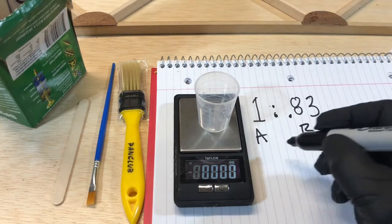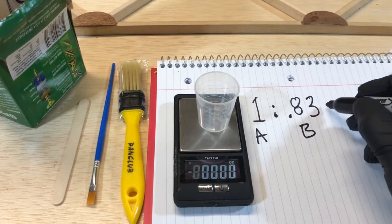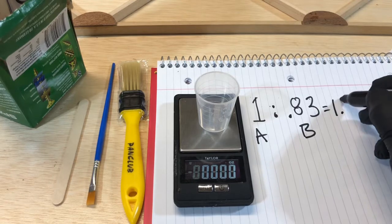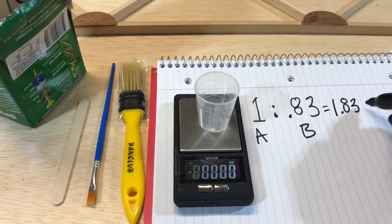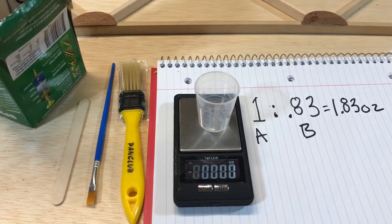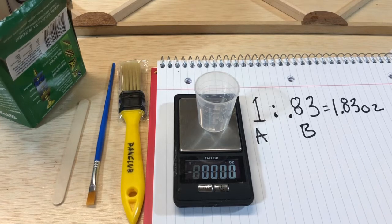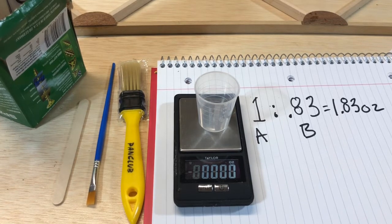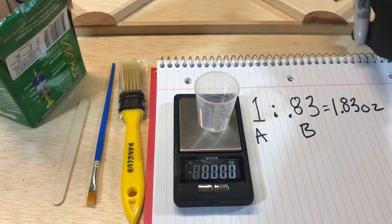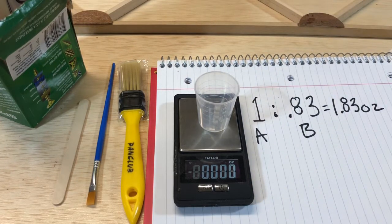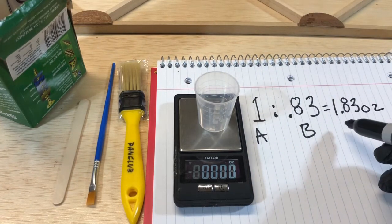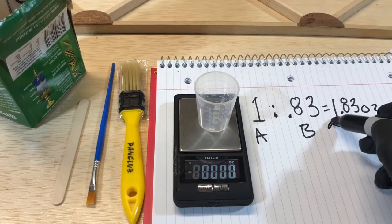Well, my higher math skills say that equals one point eight three ounces, way too much needed usually for general purposes like building wing ribs and things like that and joints. So all you have to do is move the decimal.